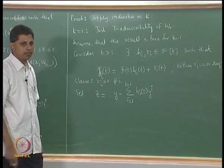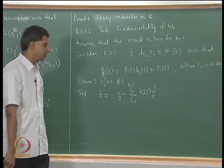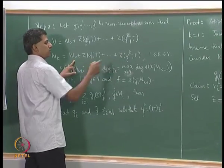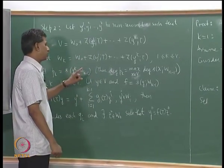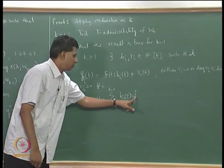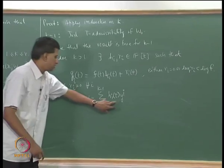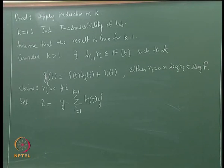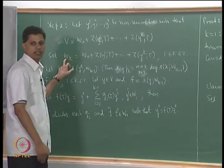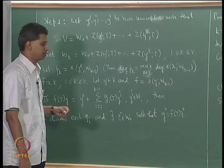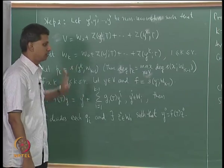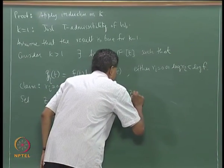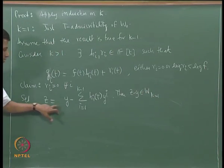W_0 is t-admissible and each W_i is t-invariant; each cyclic subspace is invariant under T. So W_k is invariant under T. The vectors y_i for i from 1 to k minus 1 belong to W_{k-1}, because W_{k-2} and so on are all contained in W_k — it is a nested sequence of subspaces: W_1 ⊆ W_2 ⊆ W_3 etcetera. So each of these terms belongs to W_{k-1}, and therefore z minus y belongs to W_{k-1}.